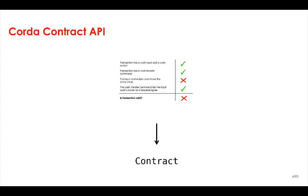And how is all this represented in code? Contracts are simply represented by the contract class, and we'll take a look at this class in the next section.